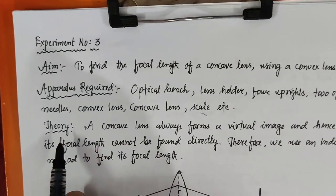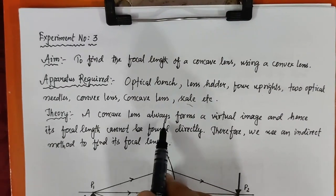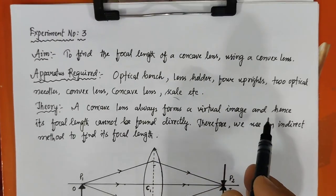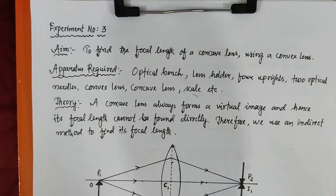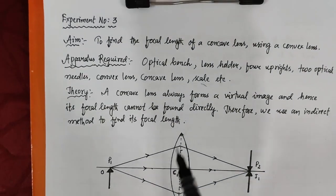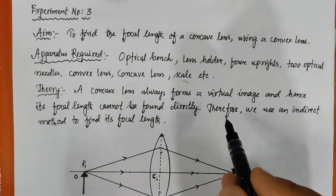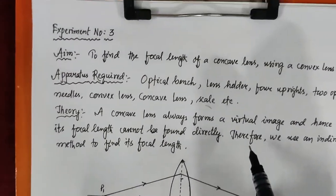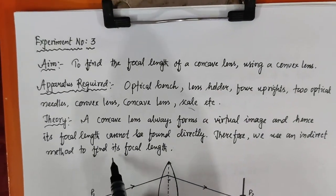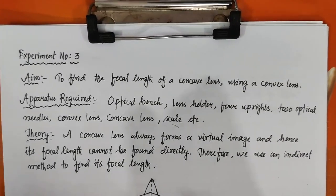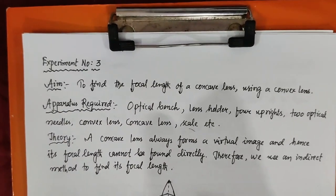Now let's come to the theoretical part — that is the theory. A concave lens always forms a virtual image and hence its focal length cannot be determined directly. A concave lens always forms a virtual image; it cannot be made on a screen and we cannot find the focal length directly. Therefore, we use an indirect method with the help of a convex lens.